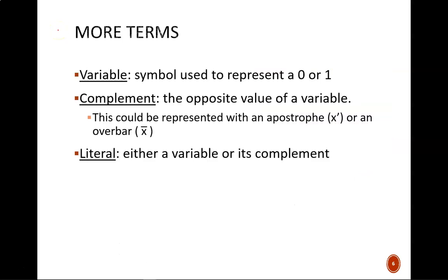Here are some new terms for you. A variable is any symbol that is used to represent a 0 or a 1. A complement is the opposite value of a variable. As you know, this can be represented with either a prime symbol or an overbar. And a literal is either a variable or its complement.